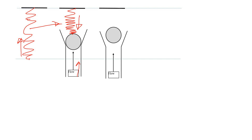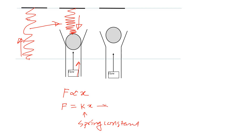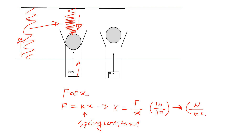The spring applies a force in this direction. Hooke's Law states that the force is proportional to the compression of the spring. Removing the proportionality sign gives a constant called the spring constant k. The unit of k is force divided by distance - in the US system, pound per inch. In the international system, the force unit is newton and distance is meter, but meter is too large, so they use millimeter - giving newton per millimeter.